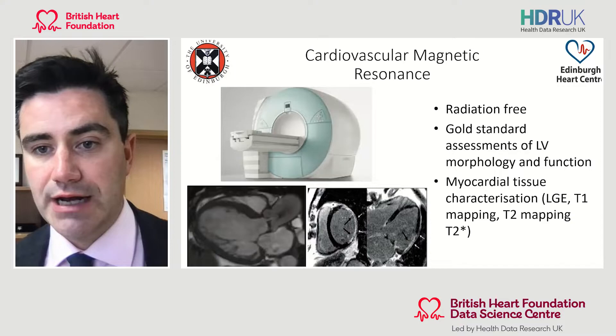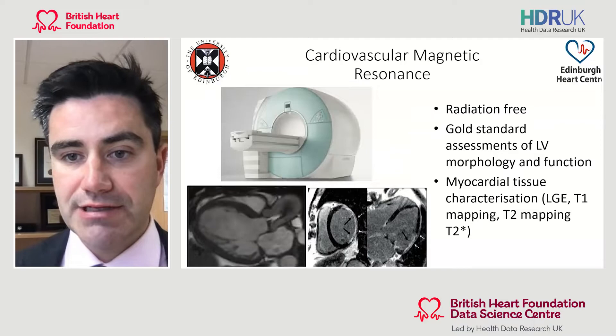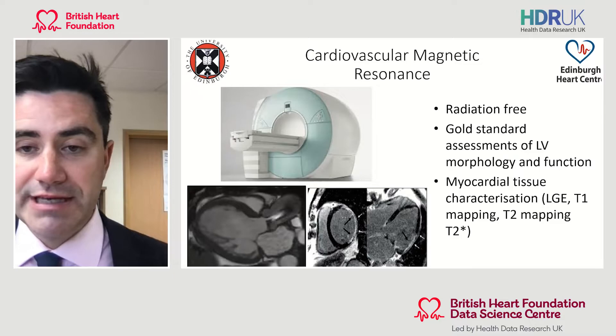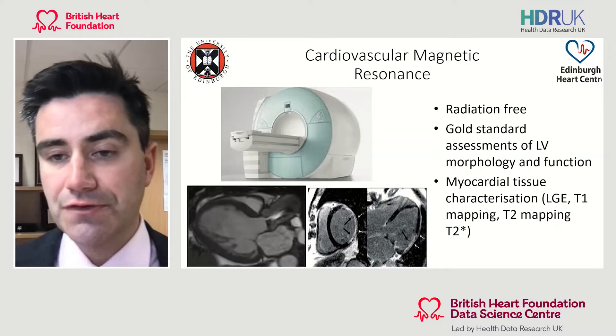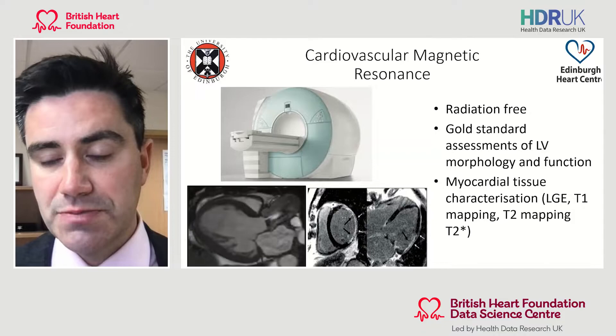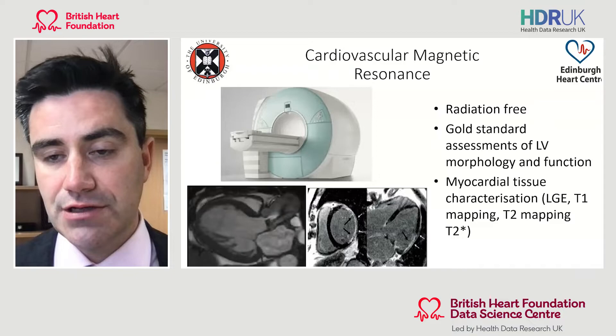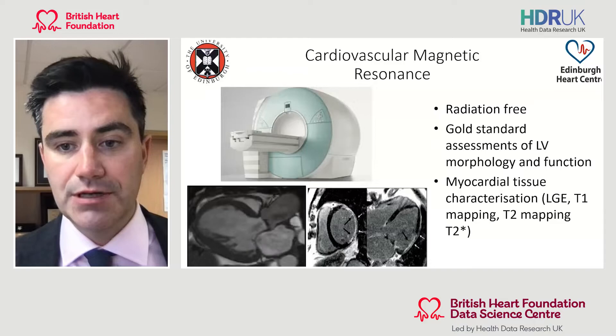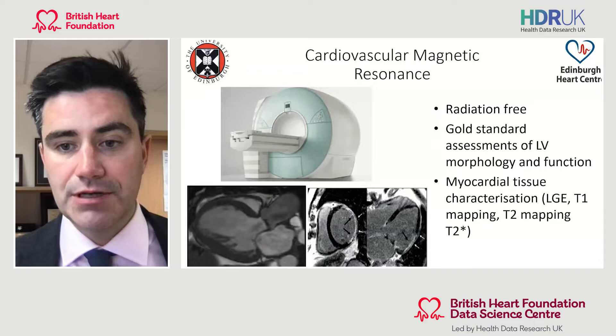In terms of looking at the heart muscle, the gold standard technique is probably MRI scanning — cardiovascular magnetic resonance. It is really good at looking at the heart muscle: how it's functioning and pumping, and the structure of the heart muscle. Crucially, we can see evidence of scarring in the muscle — scar appears white versus normal healthy muscle which appears black in these images. We can also look at iron loading, edema, and all sorts of ways of characterising the tissue in the heart.